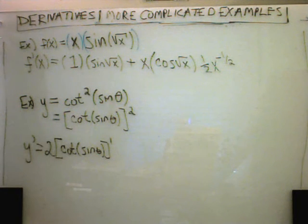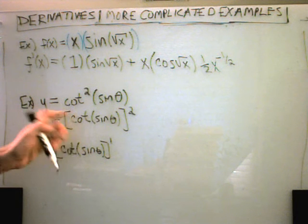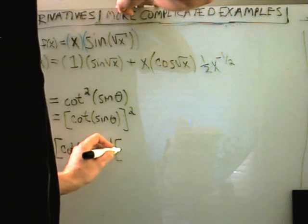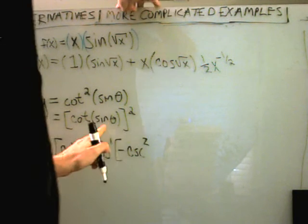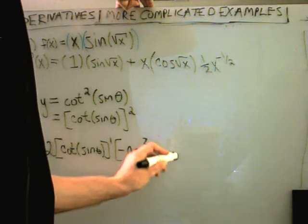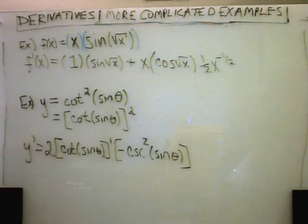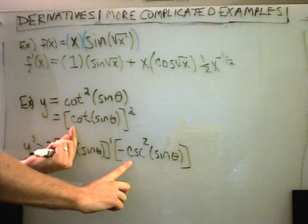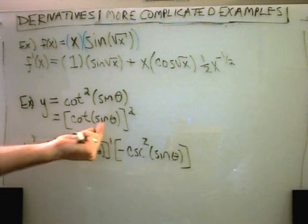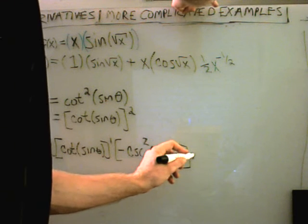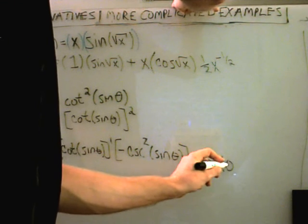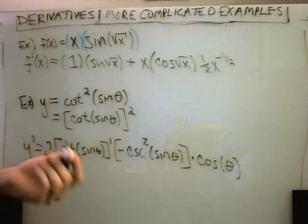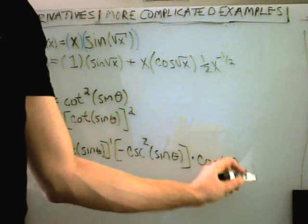Now I move to the inside. The derivative of cotangent is negative cosecant squared. Normally that would be negative cosecant squared of theta, but in this case I have sine of theta inside, so I get negative cosecant squared of sine theta. I'm still not done — I took the derivative of the squared, then the derivative of cotangent giving negative cosecant squared of sine theta, and now I move inside again and take the derivative of sine theta, which is cosine of theta. If you want to be thorough, the derivative of theta itself is just 1, so multiply by 1 as well.